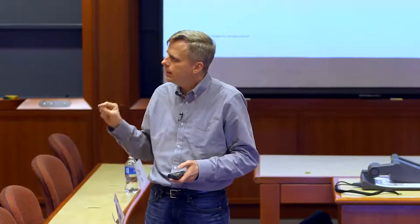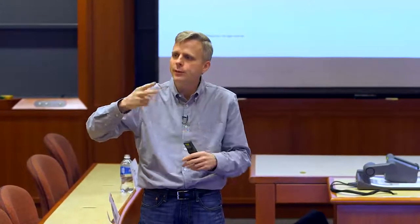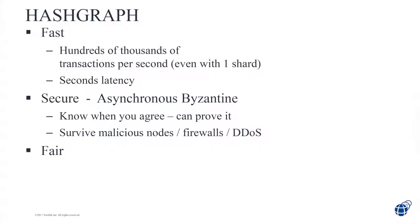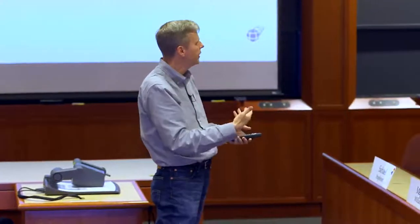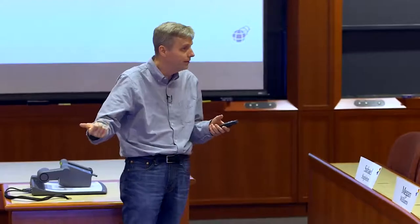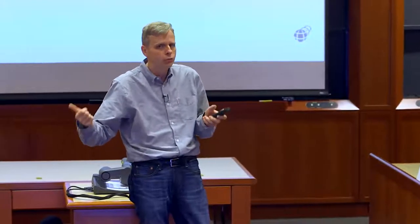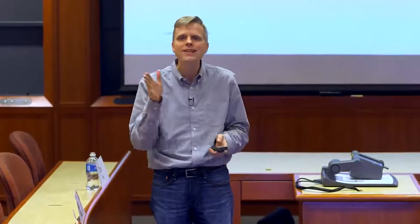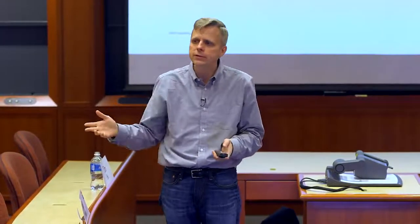What does asynchronous Byzantine mean? It means that as a community, when you have two transactions, we come to an agreement on what order they're in, and we know that we've come to agreement. It isn't just that you think they're in this order and it keeps swapping — it's that you know when you've reached agreement. If somebody pays you in your store and you're afraid of a double spend, you have to wait until you're really sure your spend came earlier. In Hashgraph, there's a definite moment when you know for sure.